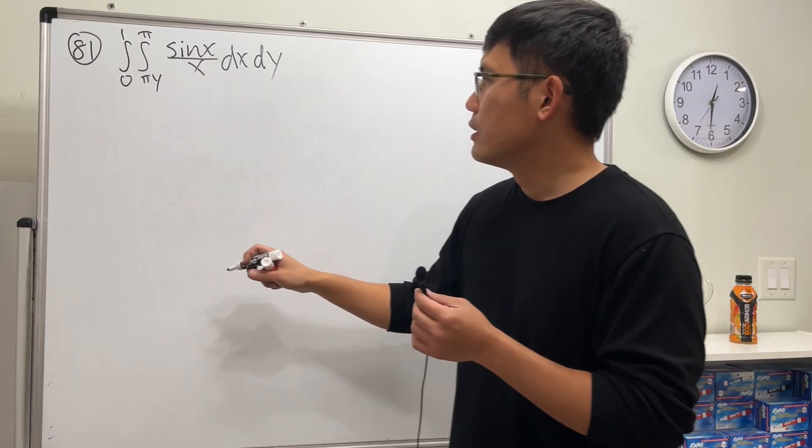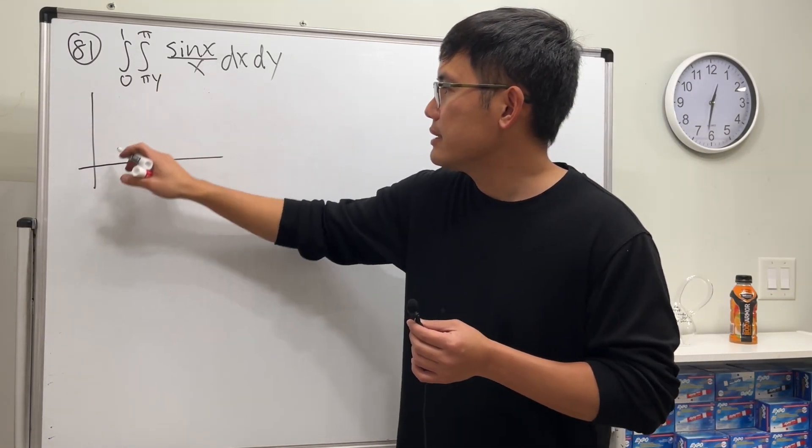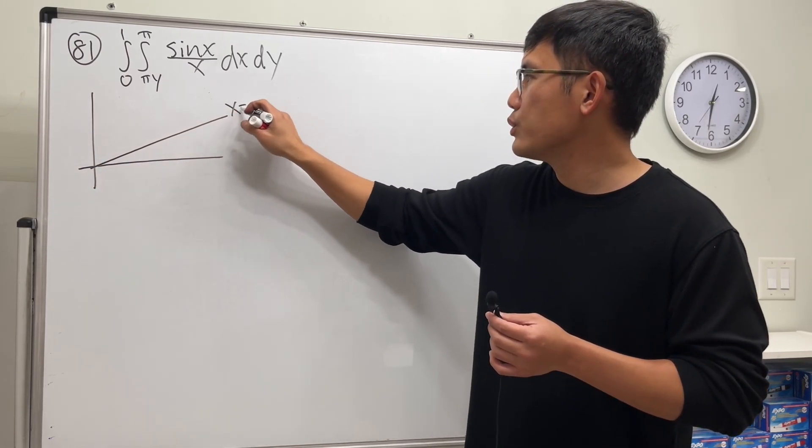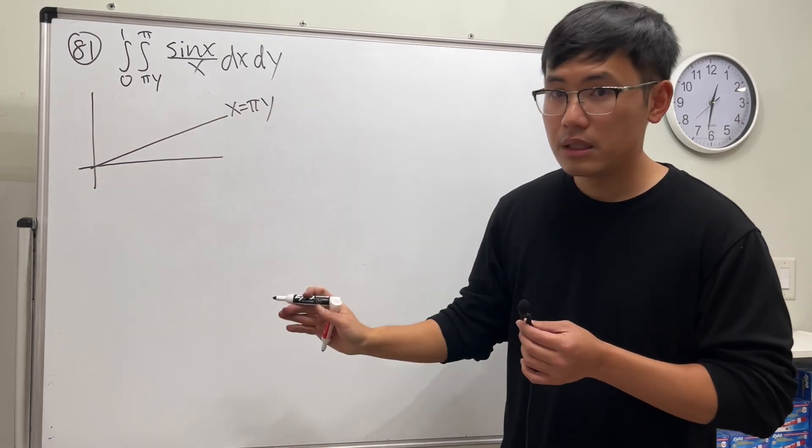So check this out. Right here, x is equal to π y. So right here x is equal to π times y, okay.